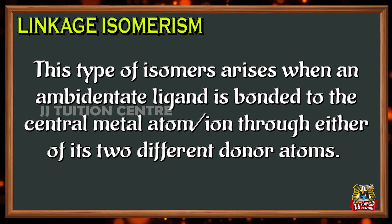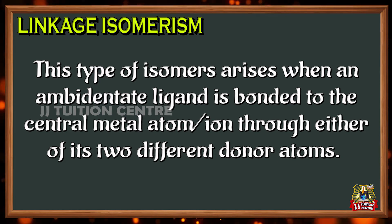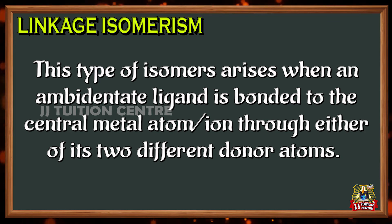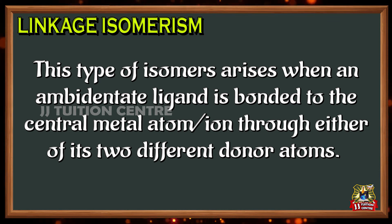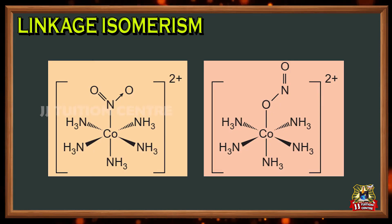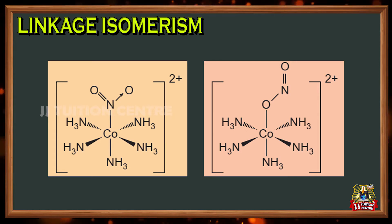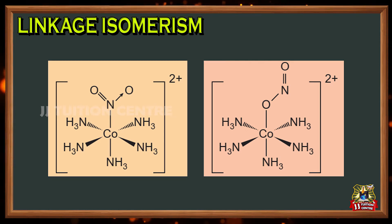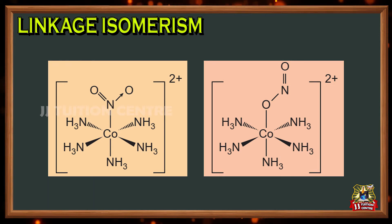Linkage isomers: these type of isomers arise when an ambidentate ligand is bonded to the central metal atom through either of its two different donor atoms. In the examples shown, the nitrite ion is bound to the central metal atom cobalt through a nitrogen atom in one complex and through an oxygen atom in the other complex.